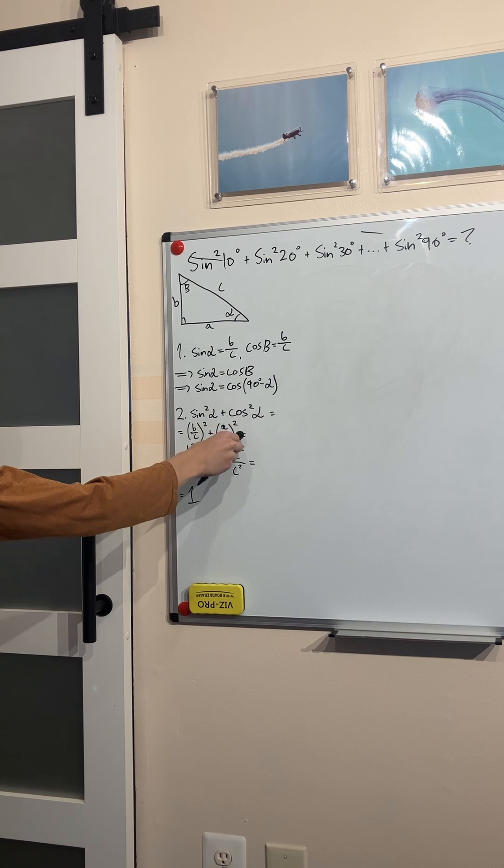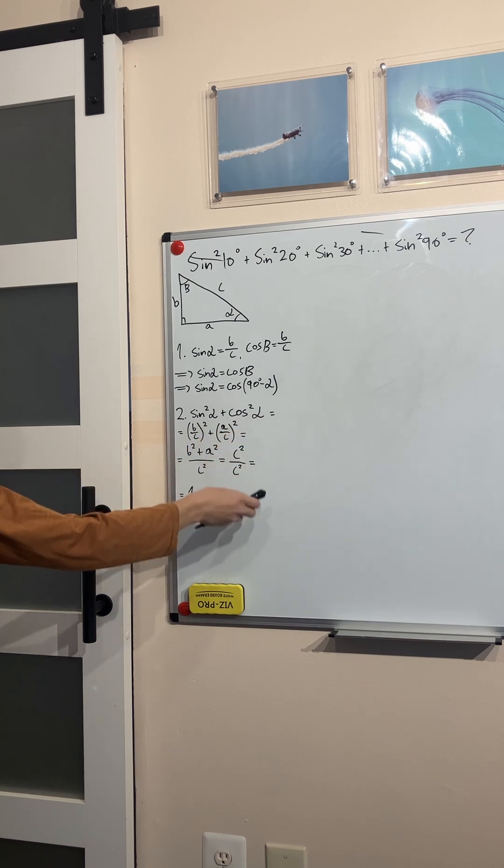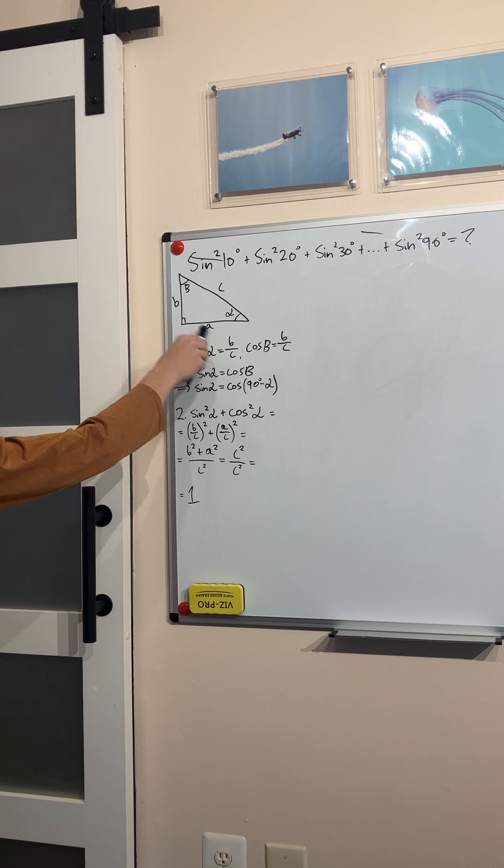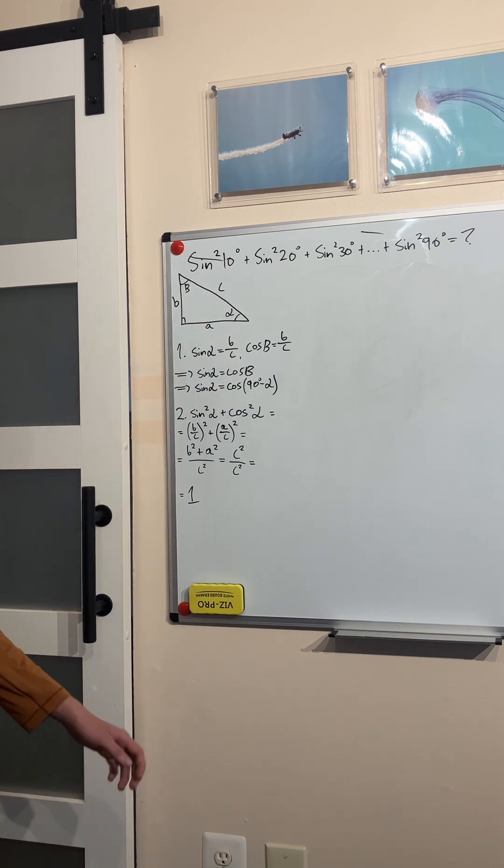Look at the sine squared of alpha plus the cosine squared of the same angle alpha. That's going to be b over c squared plus a over c squared. You can see that using the triangle. That's equal to b squared plus a squared over c squared.